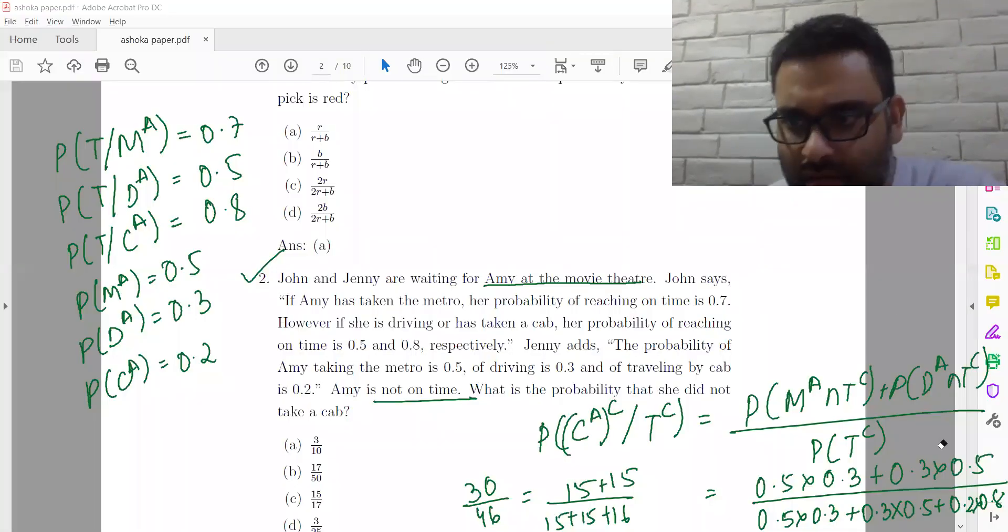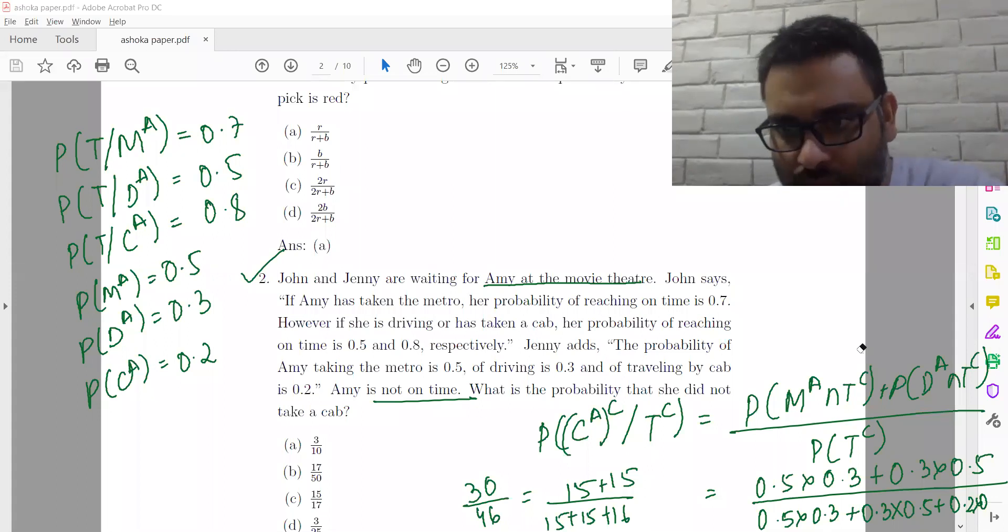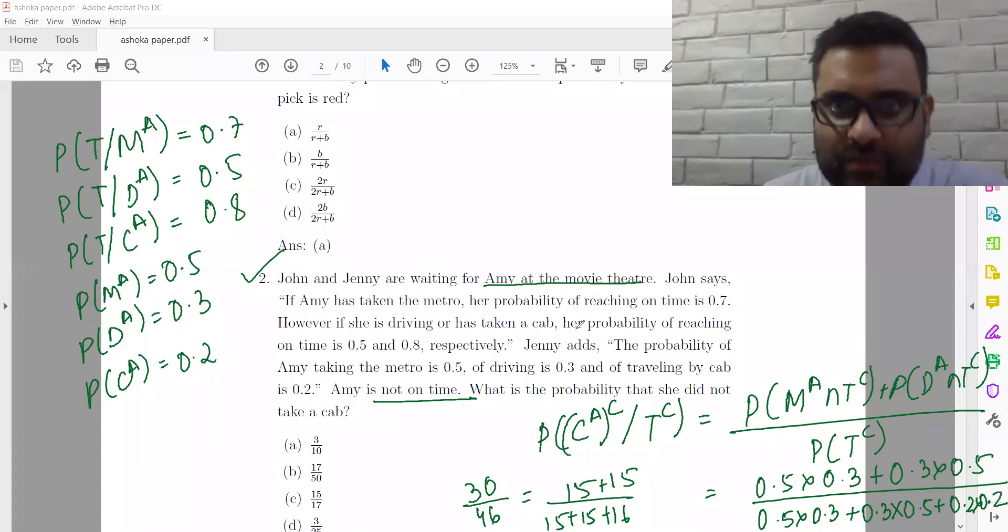Sorry. This will be 0.2. Not on time is 0.2. So this will be 4. This will be 34. This will be 15 by 17. Answer is C.